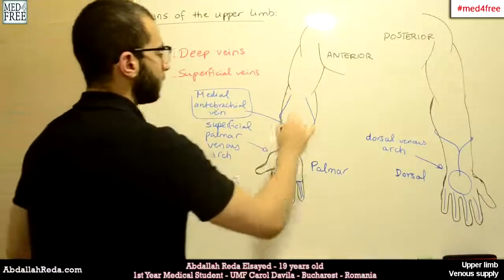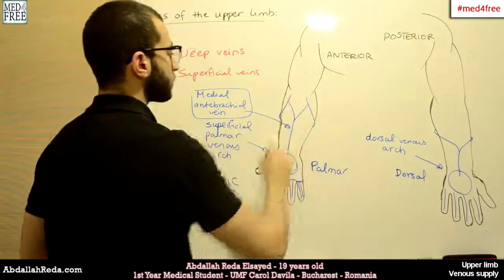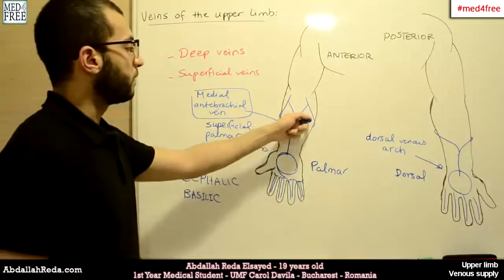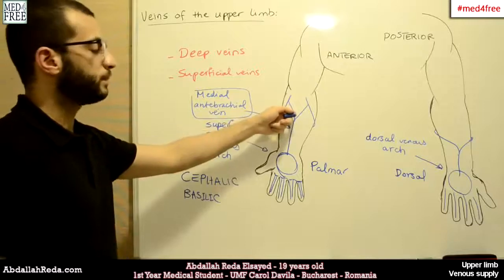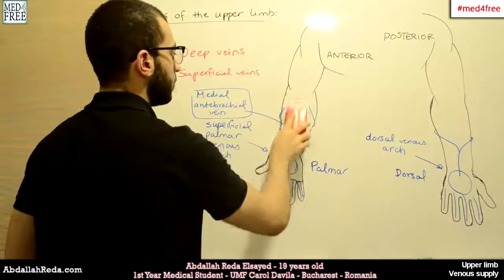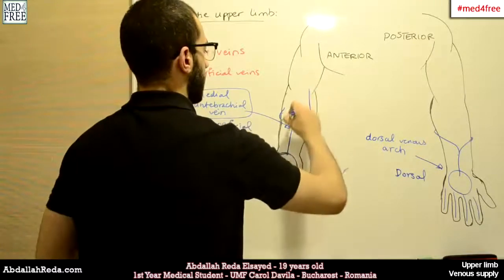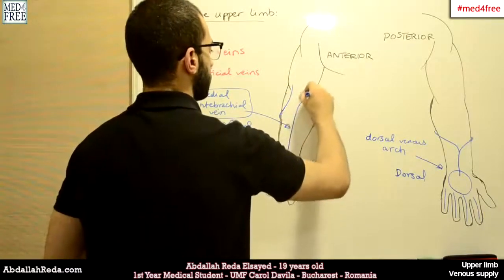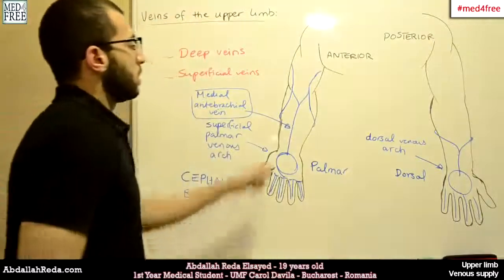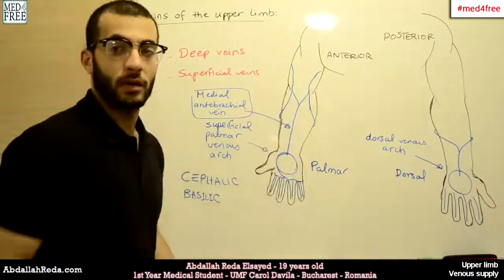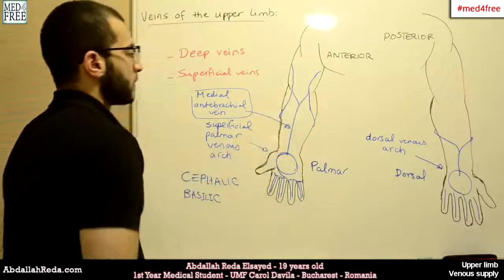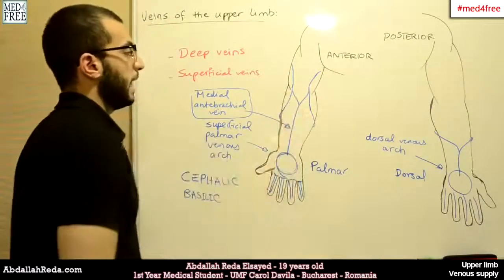The medial antebrachial vein gives two branches, named according to the vein they join: the median basilic vein and the median cephalic vein. This forms an M-shaped pattern in the antecubital region, which is the pattern used for venous puncture — the puncture is done at that M pattern.